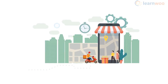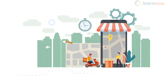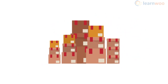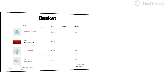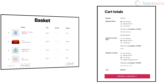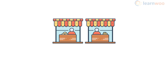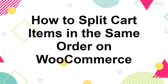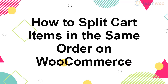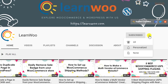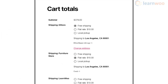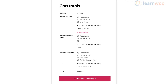The shipping strategy on your online store is dependent on a lot of factors. Sometimes you will be selling a bunch of products that require completely different approaches to shipping. What if your customers order these products together? How will you manage multiple shipping methods in one order? This scenario is also applicable for multi-vendor marketplaces where different vendors want specific shipping methods to apply. In this video we will see how you can split cart items in the same order on WooCommerce and ship using different methods.